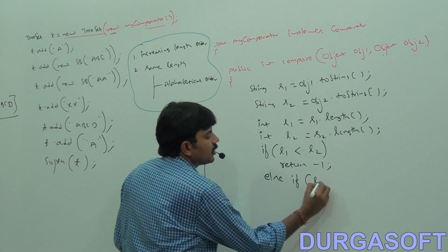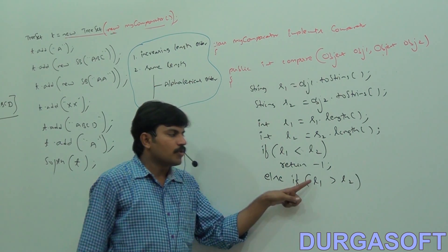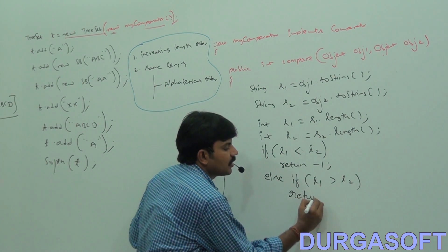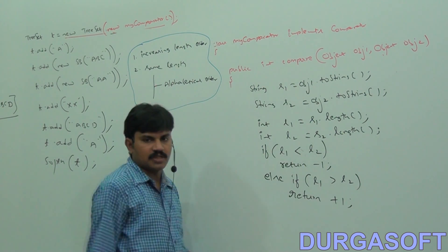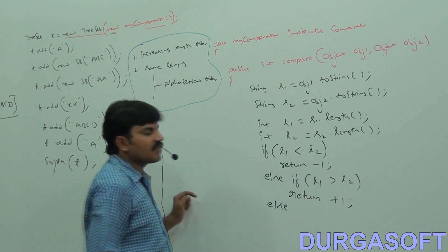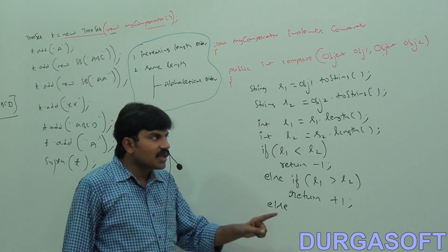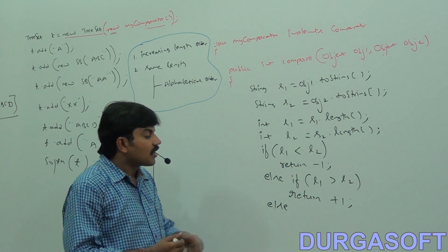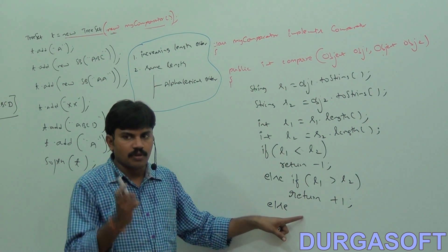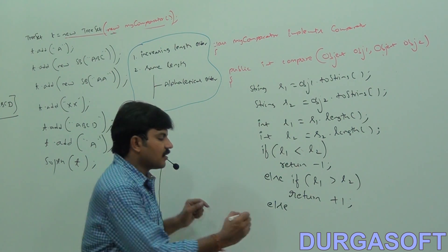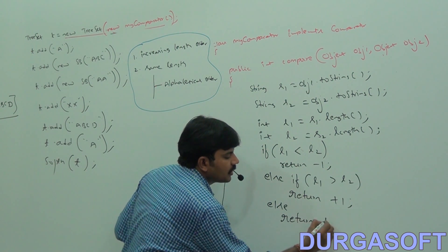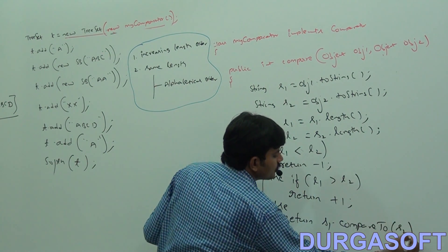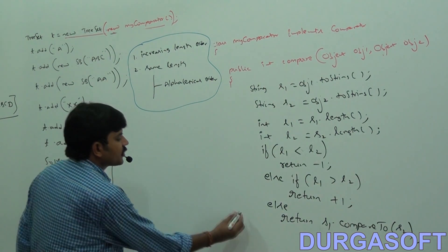Else, if both are having the same length, we need to consider their alphabetical order. If we return zero, duplicates will be lost. So instead, return S1.compareTo(S2). Return S1.compareTo(S2) — end of this. Are you getting the point?